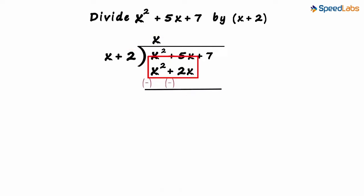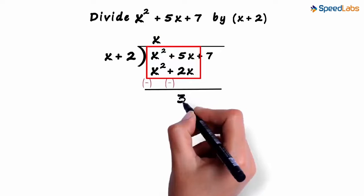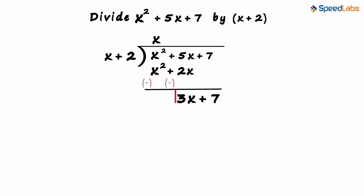Subtracting the product we got here from the dividend, we get 3x plus 7. Dividing 3x by x, we get 3 as the second term of our quotient.